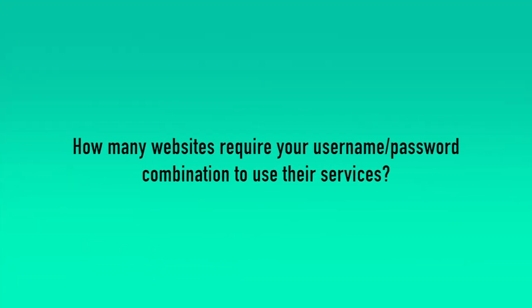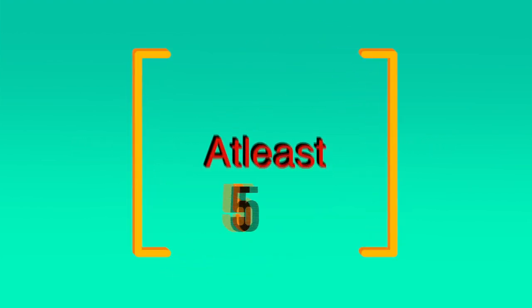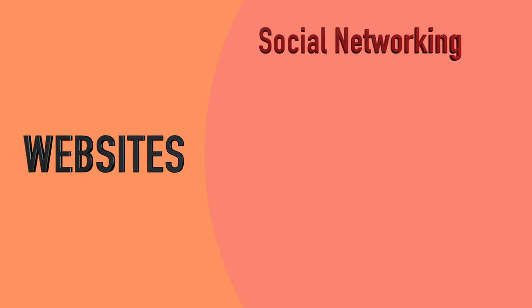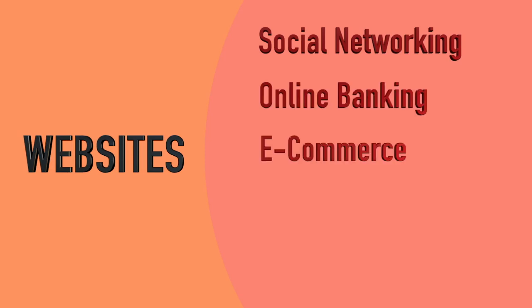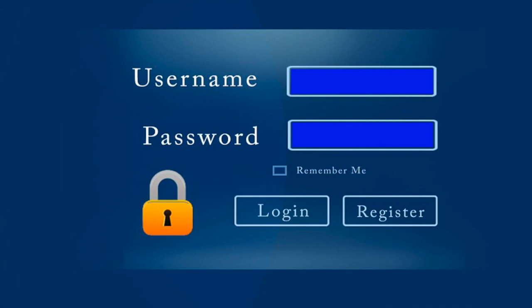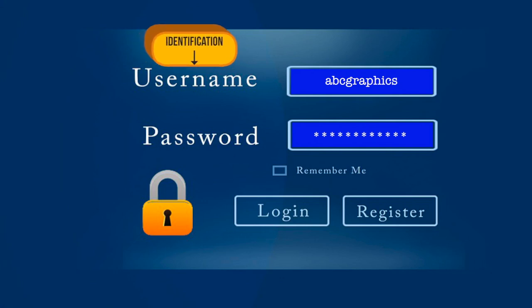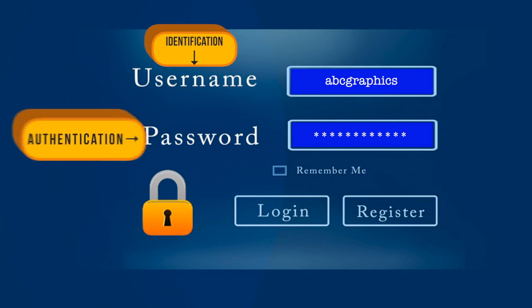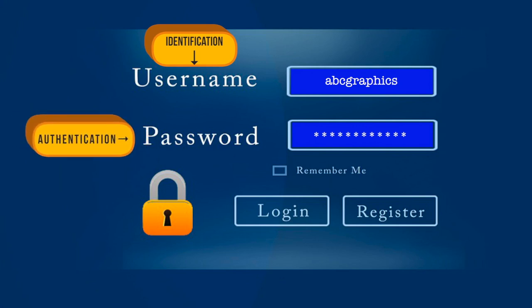Remember the same question I asked you in the previous module: how many websites are there in which you have to supply a username and a password combination to use their services? As per research, at least five websites. There are also different websites like social networking websites, online banking websites, e-commerce websites, blogs, emails, and so on. Let us go to a login screen and understand what we supply. We supply a username and a password. The username is the identification part — you identify yourself. The password is the authentication part.